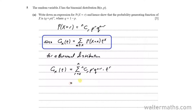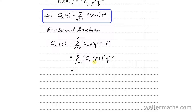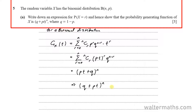This simplifies to the sum from R equals 0 up to N of N choose R. For P to the power of R and T to the power of R, we can combine them into PT to the power of R, times Q to the N minus R. What we have here can be expressed in binomial form as PT plus Q to the power of N, which is the same as Q plus PT to the power of N. So this is the result — hence shown.